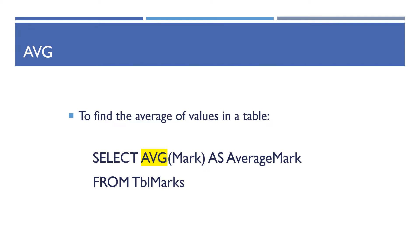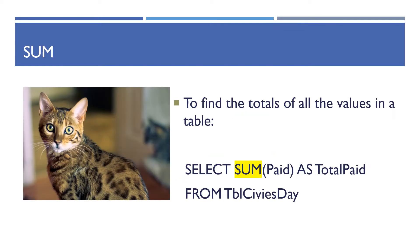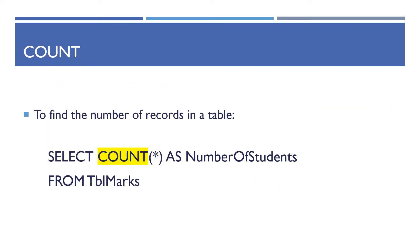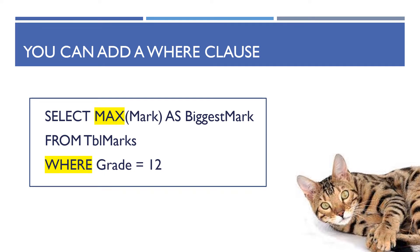AVG finds the average of all values in a table: SELECT AVG(mark) AS average_mark FROM marks. SUM finds the total of all values — for example all amounts paid on a civvies day: SELECT SUM(paid) AS total_paid FROM civvies_day. COUNT counts the number of records: SELECT COUNT(*) AS number_of_students FROM marks. You don't need a field name — just use COUNT(*).